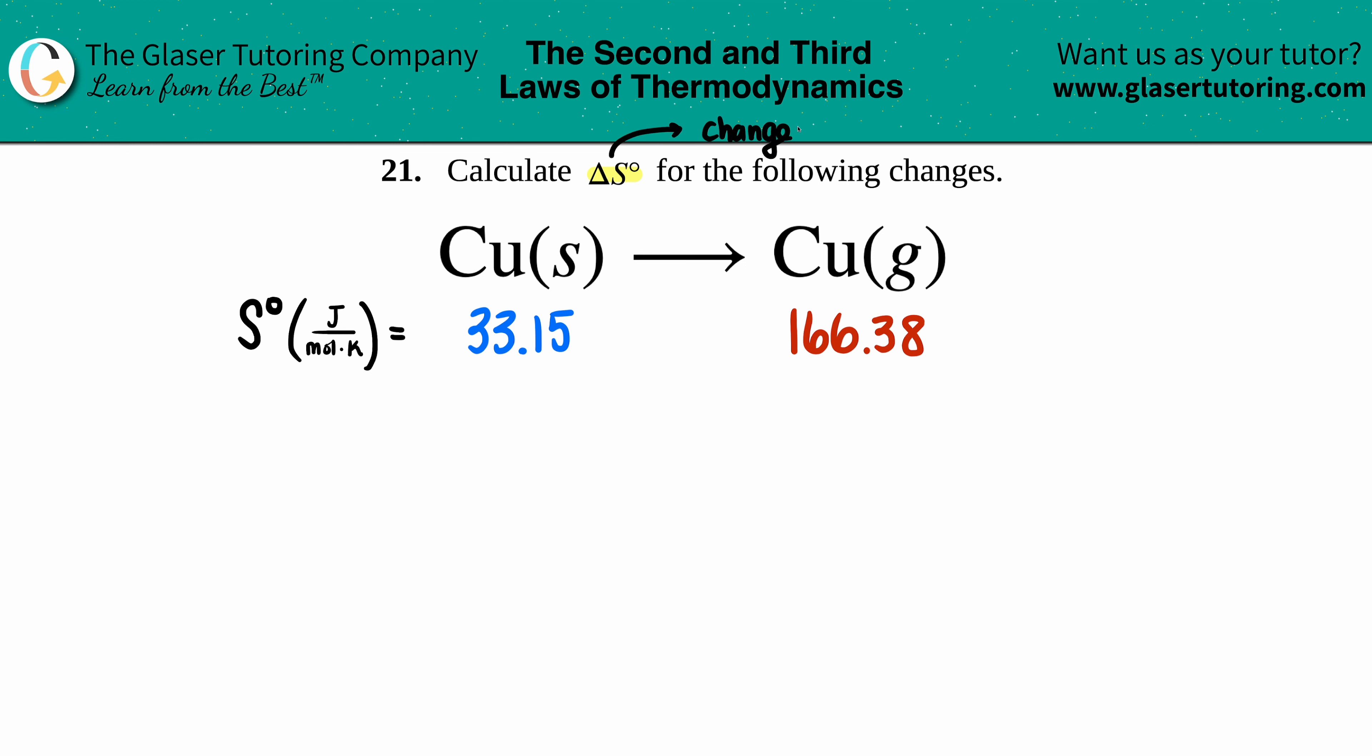That delta is always a change value - the change in entropy - so we're thinking of randomness of molecules going on in our container. Keep in mind that if we're going from a solid to a gas, the solid molecules are very tightly compacted and the gas molecules are all over the place.